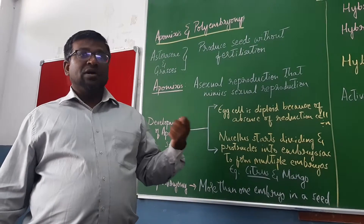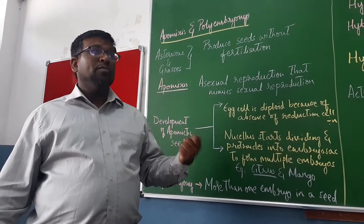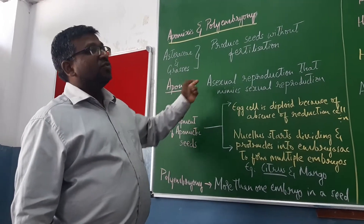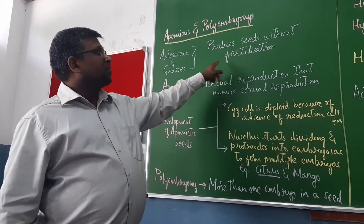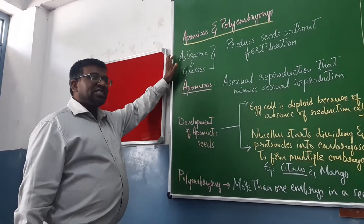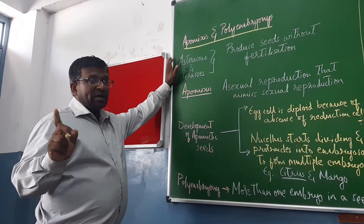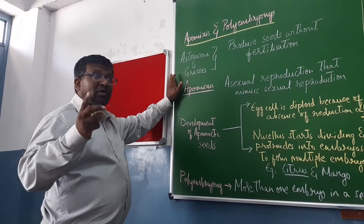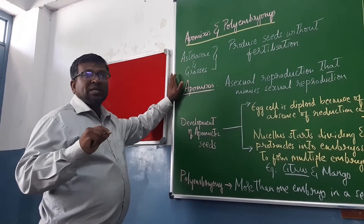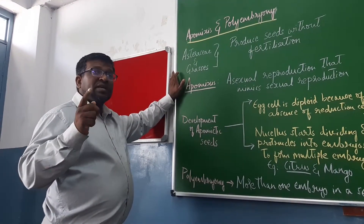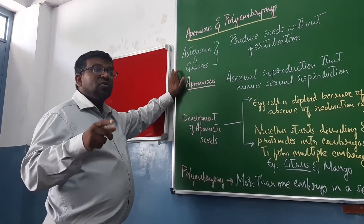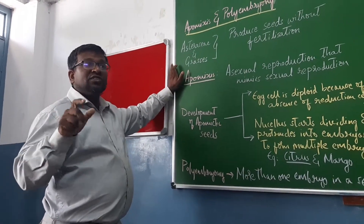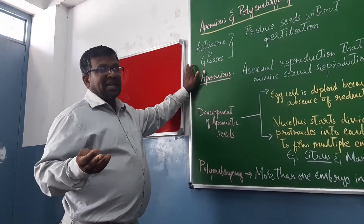This is not parthenocarpy — we are talking about apomixis. Parthenocarpy is the formation of fruits without fertilization, whereas apomixis refers to the formation of seeds without fertilization.